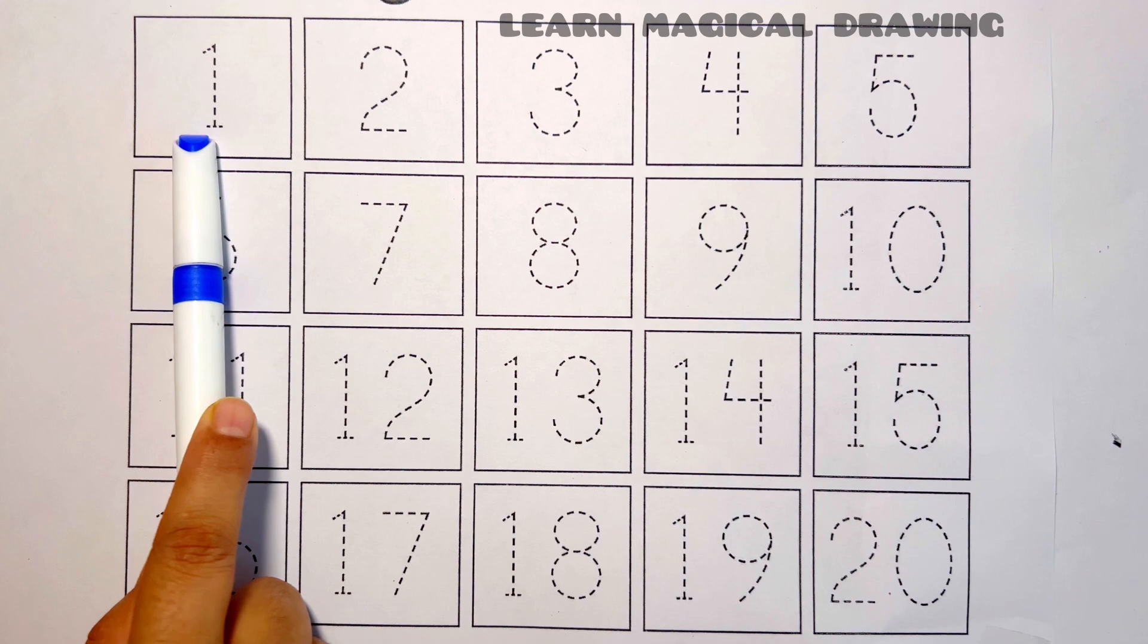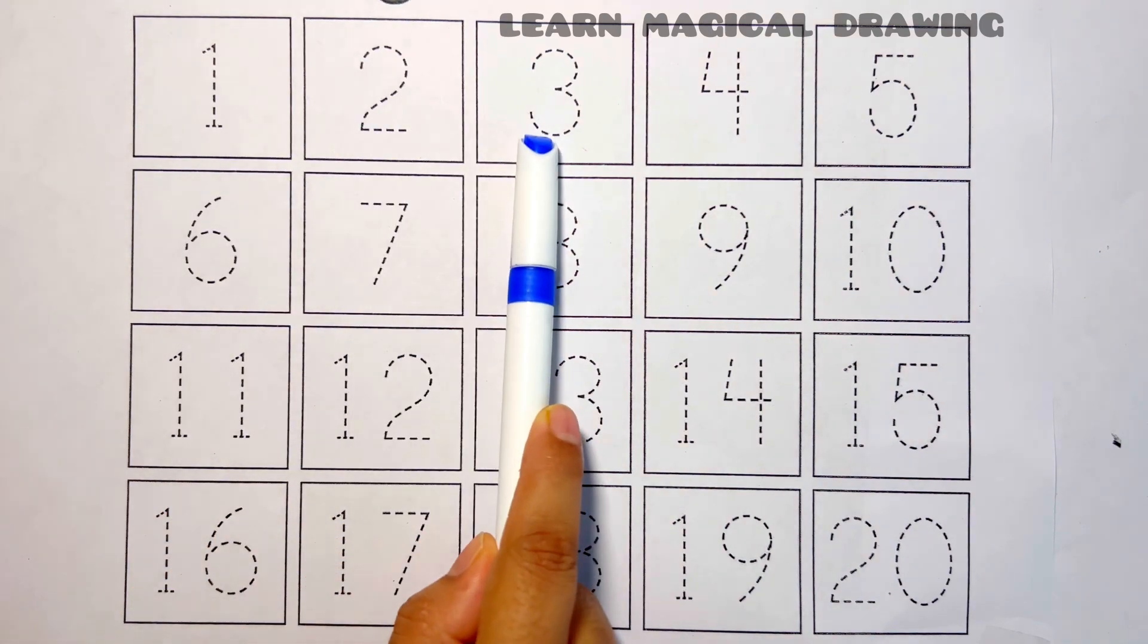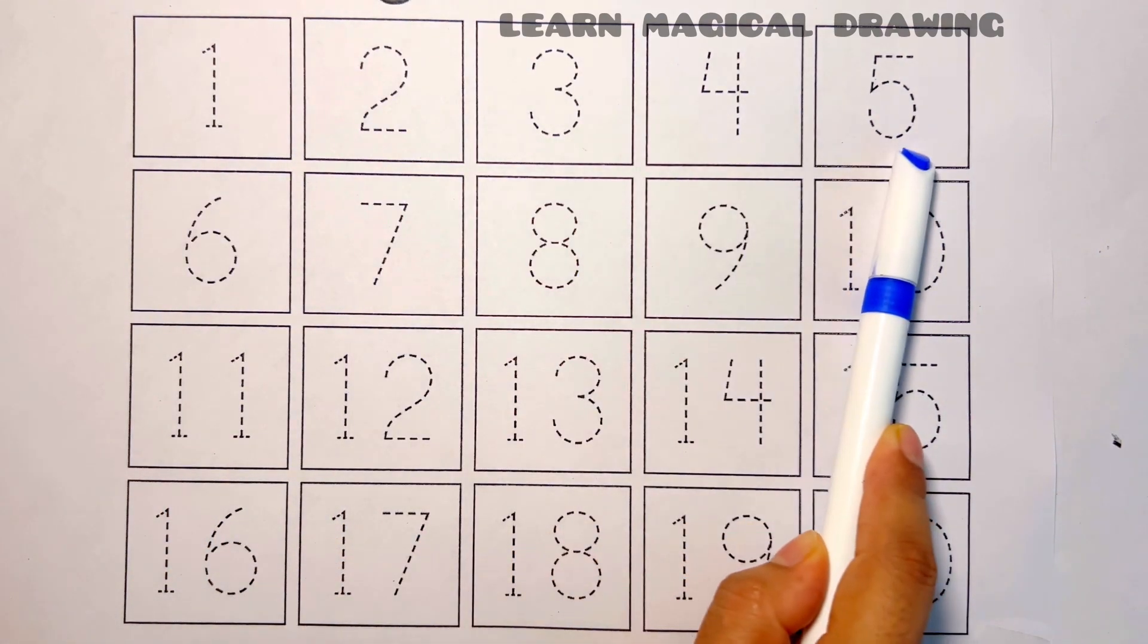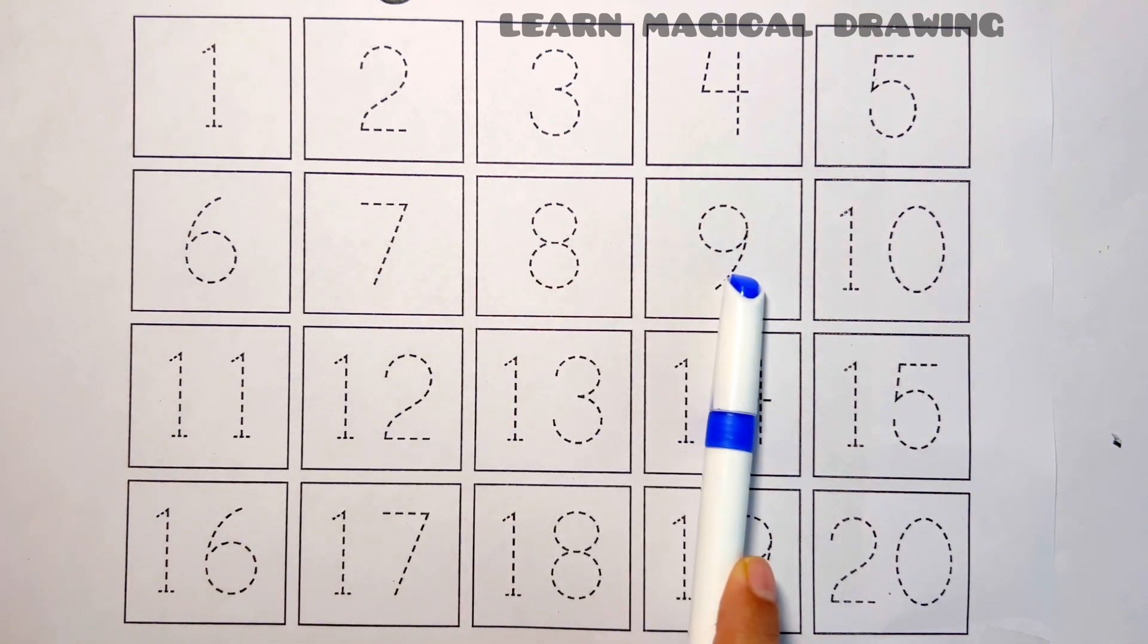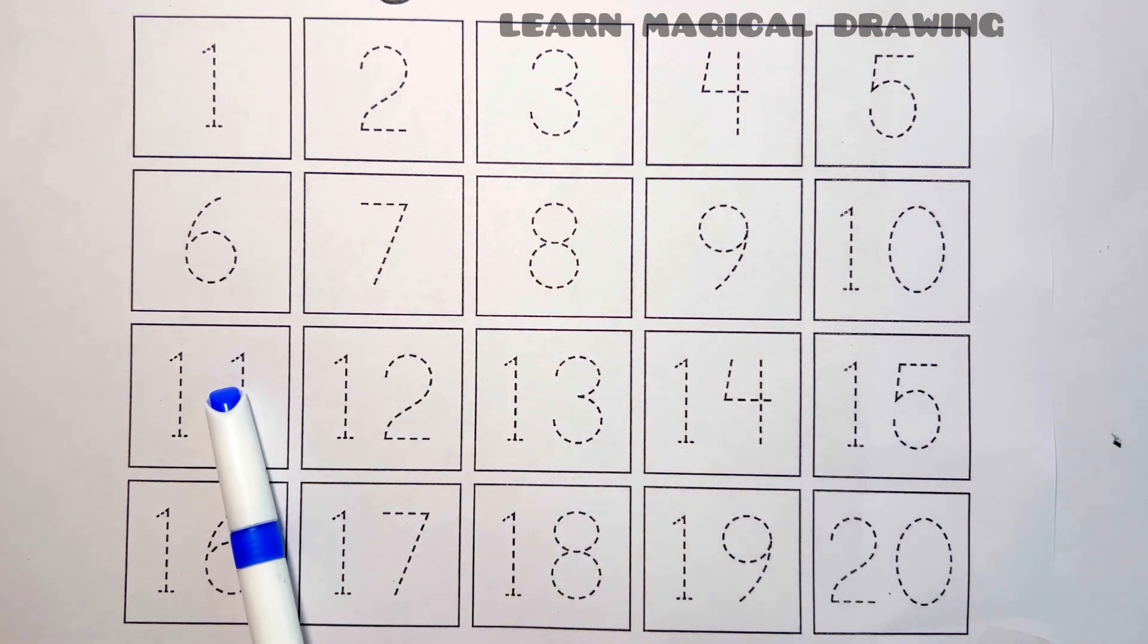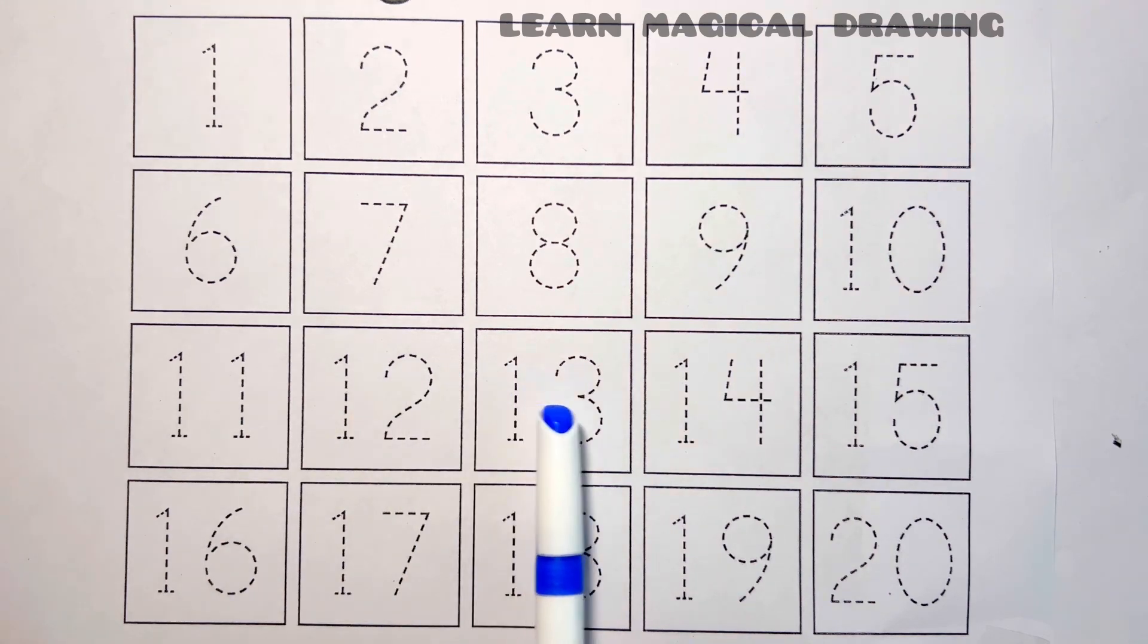Orange color and brown color. Let's learn number 1, 2, 3, 4, 5, 6, 7, 8, 9, 10, 11, 12, 13, 14, 15, 16, 17, 18, 19, 20.